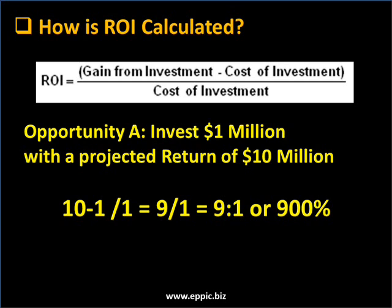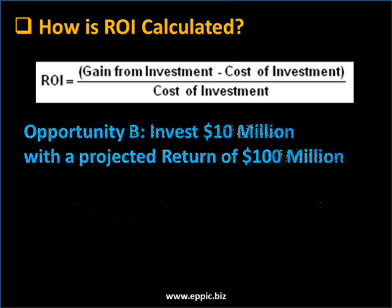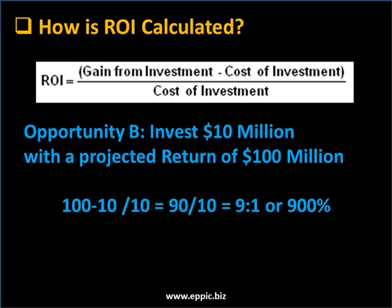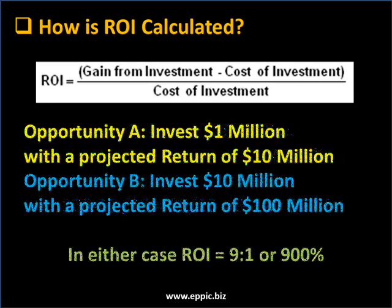Let's look at another opportunity. Opportunity B — we're going to up the stakes. We're going to invest $10 million with a projected return of $100 million. 100 minus 10, divided by 10, equals 90 over 10 — or 9 to 1, or 900%. That's the same thing as the first example. In either case, ROI is 9 to 1 or 900%.